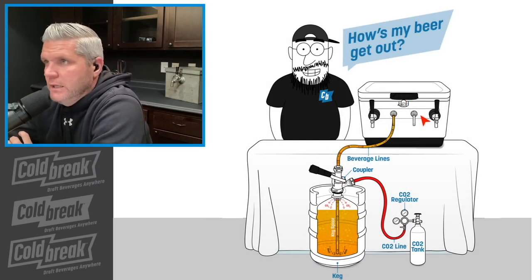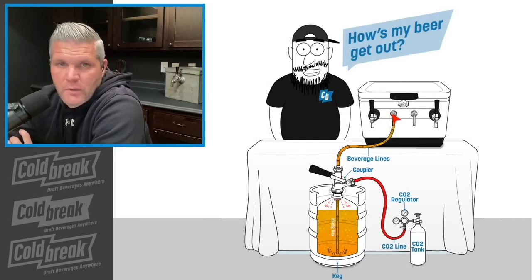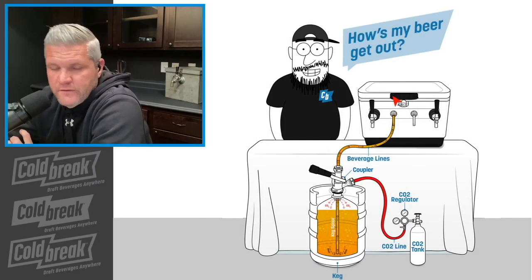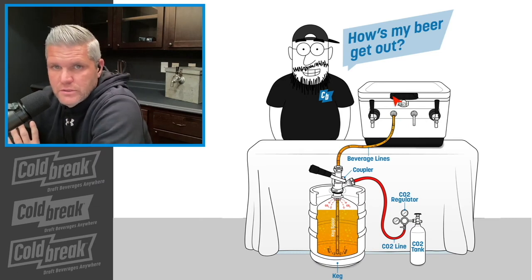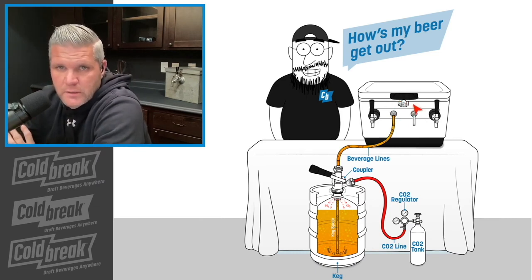This is displaying a jockey box — one of three systems, whether it's the long draw, direct draw, or jockey box, which is the temporary setup.